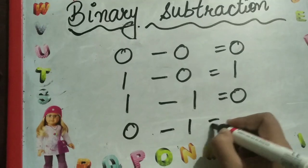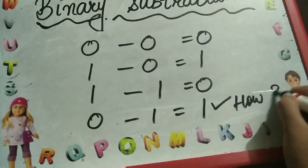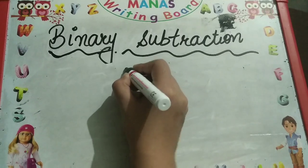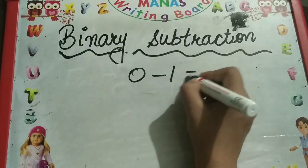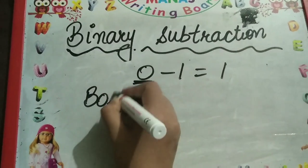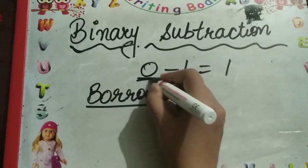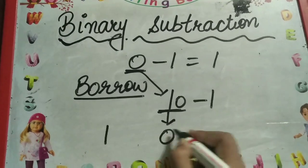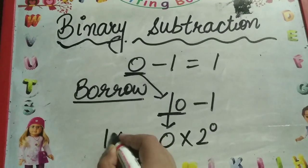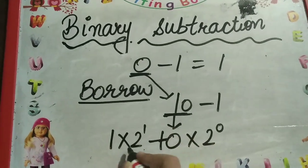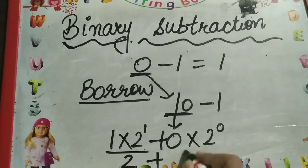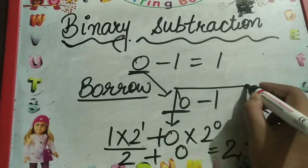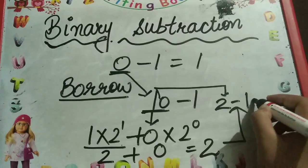And 0 minus 1 equals 1 — how? Let us check it. During any calculation we borrow a number from the left side, and 0 becomes 10. Now 10 minus 1: let us check what 10 is in decimal form. 0 into 2 raise to the power 0, plus 1 into 2 raise to the power 1 — adding both: 2 plus 0 equals 2. So 10 is 2 in decimal form, and 10 minus 1 becomes 2 minus 1, which equals 1.